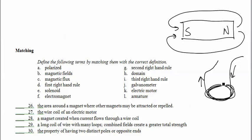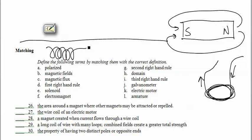A long coil of wire with many loops combined fields create greater total strength. Well, that would be a solenoid. We've got a long wire. And if we take this long wire, then, and loop it, we're going to get a solenoid.